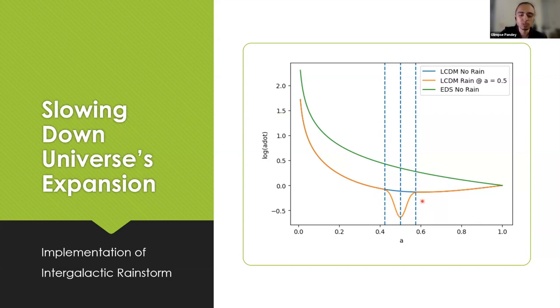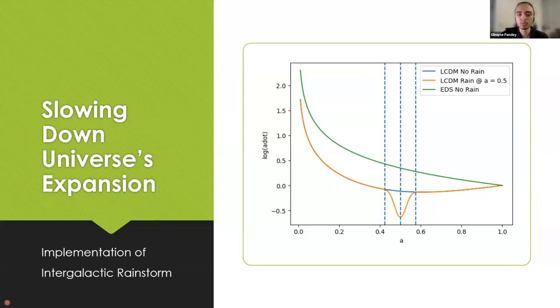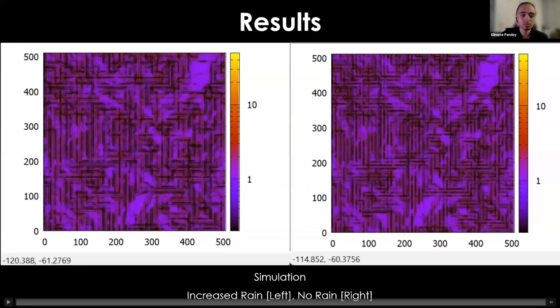This is the picture of the simulation that we completed, one of them. On the left, we introduced a big rainstorm in the middle, as shown in the previous graph around this a value. On the right, there is no rain, and we can see a difference, a subtle difference.